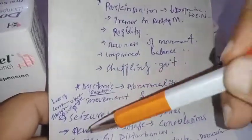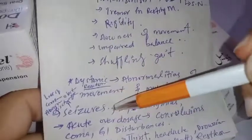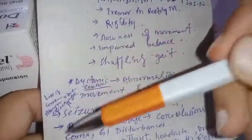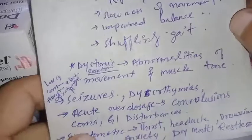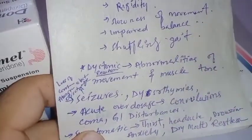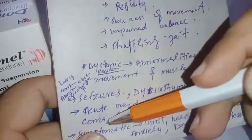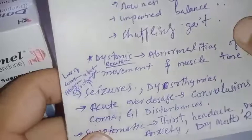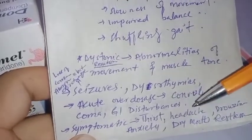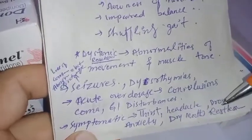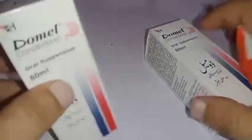Other side effects include seizures — which is loss of consciousness due to abnormal electrical discharge in the brain — and arrhythmias, meaning irregular heartbeats. Acute overdose can lead to convulsions and coma. GI disturbance can also occur. Symptoms the patient may feel include thirst, headache, drowsiness, anxiety, dry mouth, restlessness, and insomnia.